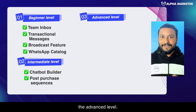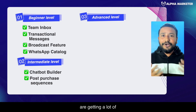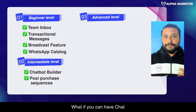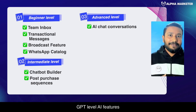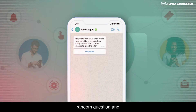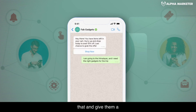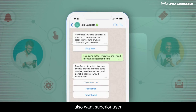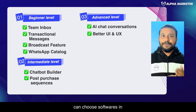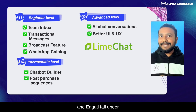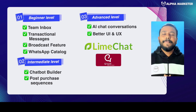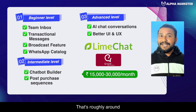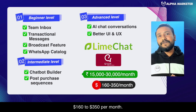Lastly, there is the advanced level. This is where you're scaling and getting a lot of traction on WhatsApp, and you need a higher level of automation — for example, ChatGPT-level AI features where people type a random question and your WhatsApp software understands it and gives a ChatGPT-like answer. If you need that level of automation and superior user experience, then tools like Limechat and Engati fall under this category. The price of these softwares ranges from 15,000 to 30,000 rupees per month — roughly $160 to $350 per month.